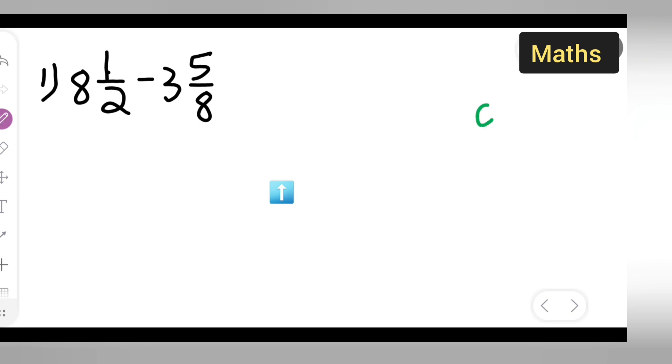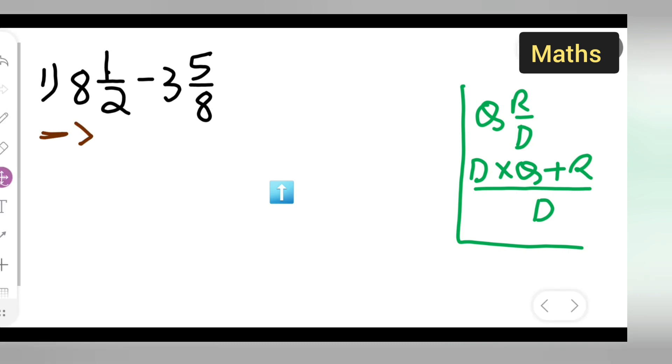This mixed fraction is in the form of quotient, remainder upon dividend. The dividend is multiplied with the quotient, plus the remainder, all upon the dividend. This is the rule we're applying. Let's apply the rule.